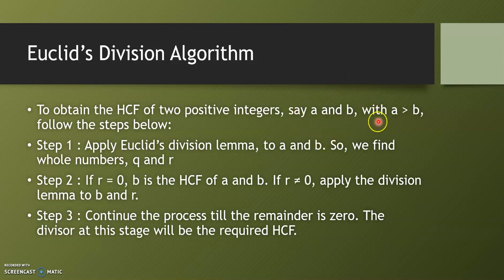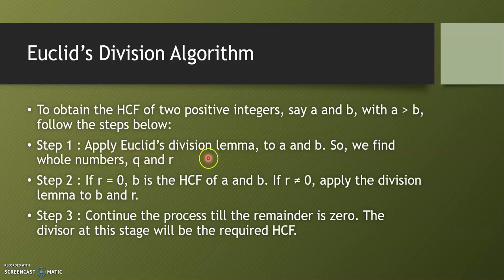The first step is to decide which number is greater. Suppose A and B are two integers and A is greater than B. Then step one is to apply Euclid's division lemma by dividing A by B, so that you get the quotient and remainder.